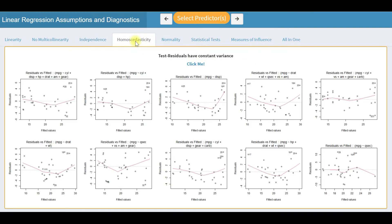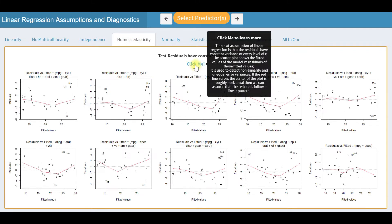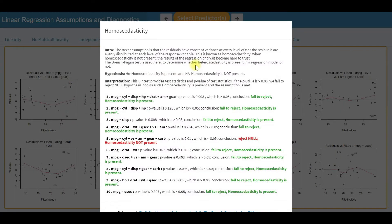Next is homoscedasticity. Here we use the Breusch-Pagan test. You have the interpretation of results for this dataset. Links in the footer are for better understanding.